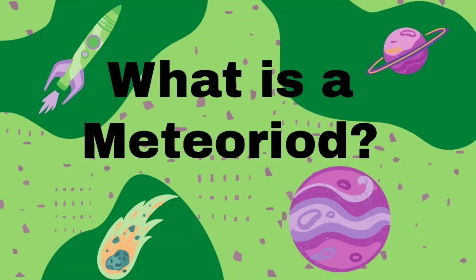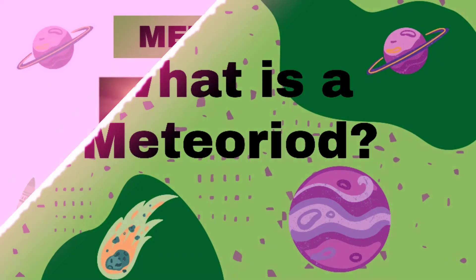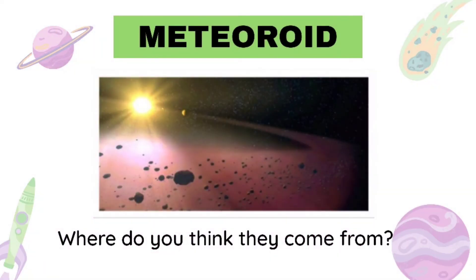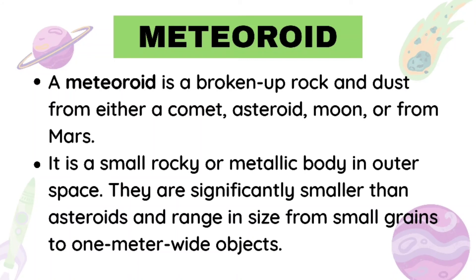Now moving on — what is a meteoroid? Where do you think they come from? A meteoroid is a broken-up rock and dust from either a comet, asteroid, moon, or from Mars. It is a small rocky or metallic body in outer space. They are significantly smaller than asteroids and range in size from small grains to 1 meter wide objects.